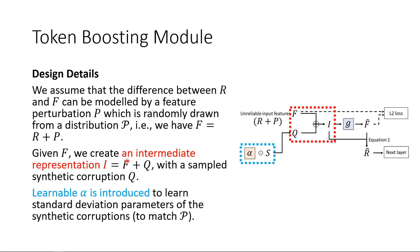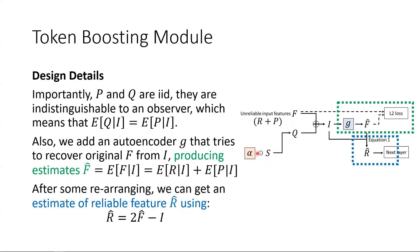Given F, we create an intermediate representation I equals F plus Q, with a sampled synthetic corruption Q. Learnable alpha is introduced to learn the standard deviation parameters of the synthetic corruptions, which tries to match P. Importantly, P and Q are IID; thus they are indistinguishable to an observer, which also means that the expectation of Q given I is equal to the expectation of P given I. We also add an autoencoder G that tries to recover the original F from I, producing estimates F-hat. After some rearranging, we can get an estimate of the reliable feature R-hat using R-hat equals 2F-hat minus I. Please see more details in the paper.